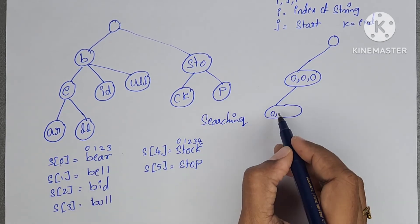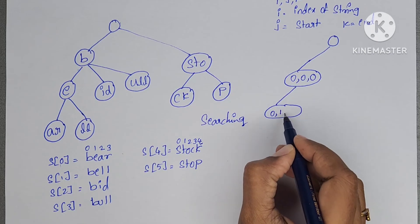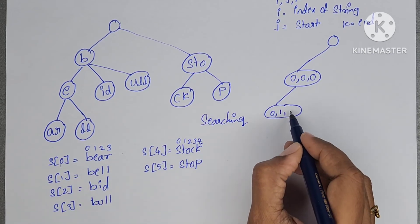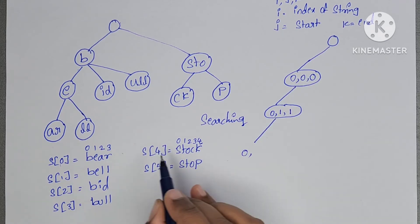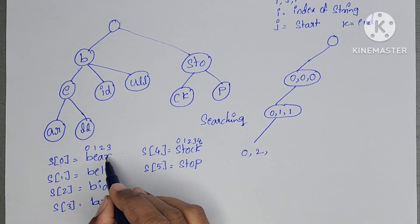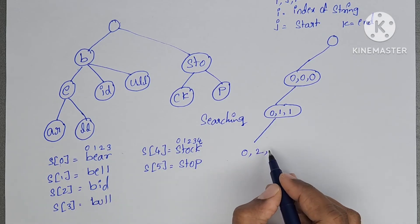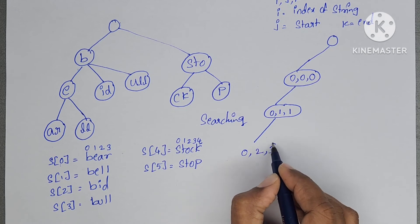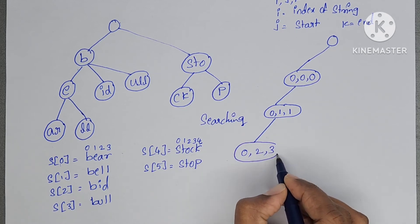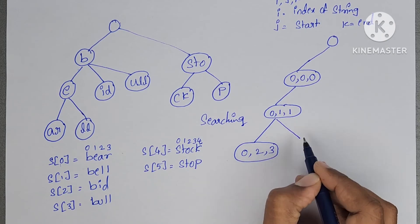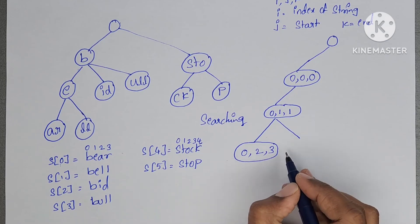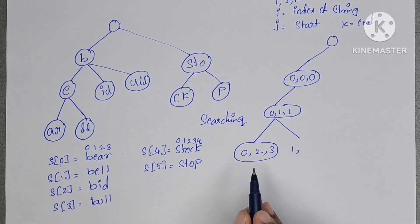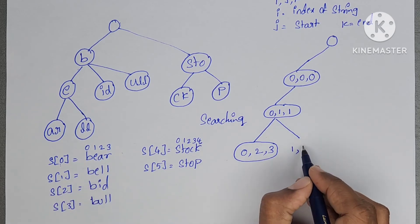For the combined node A-R: it is present in the 0th string, starting index is 2, ending index is 3. For the combined node L-L: it is present in the 1st string, starting index is 2, ending index is 3.